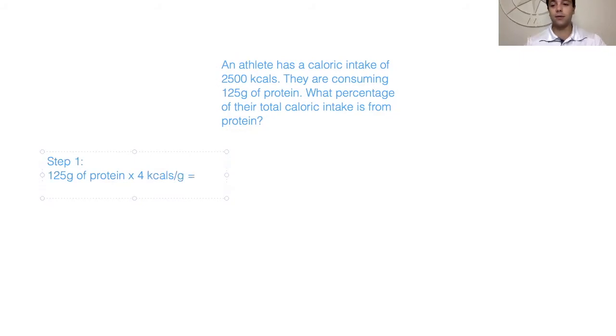So 125 times 4 kcals per gram. This is how I would break it down: we have 125, in order to break that up I would do 100 times 4 and I would do 25 times 4, because 100 plus 25 would be that 125 we're dealing with. So 100 times 4 would be of course 400, and 25 times 4 would be 100. If you have four quarters that would equal a dollar.